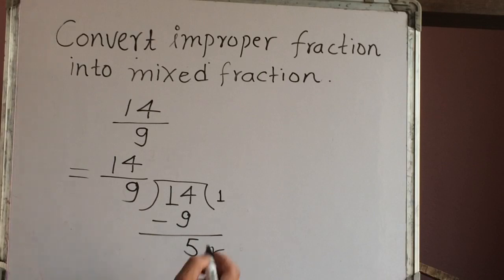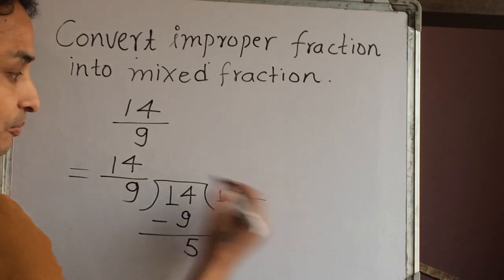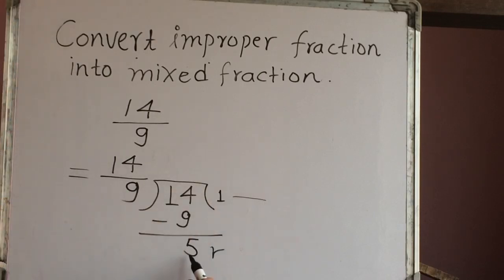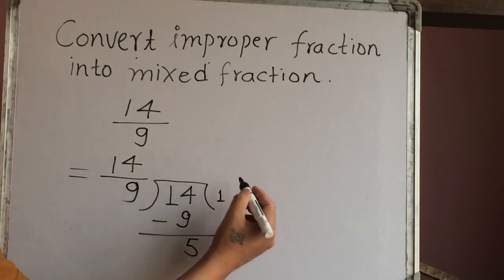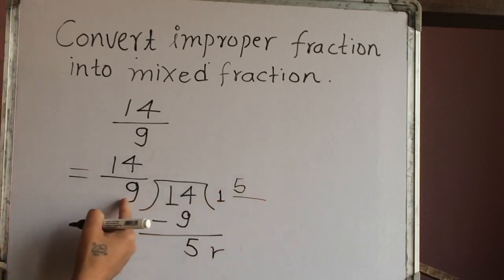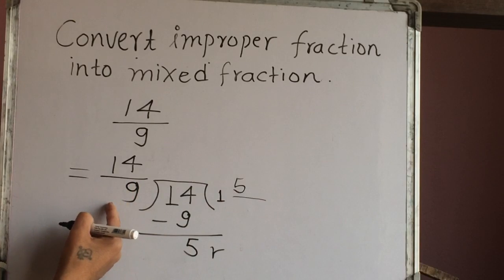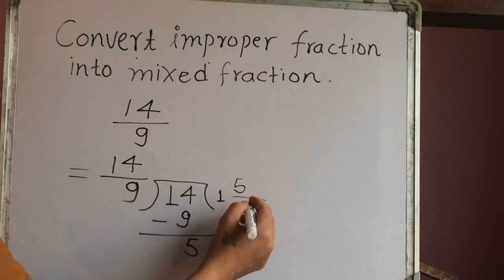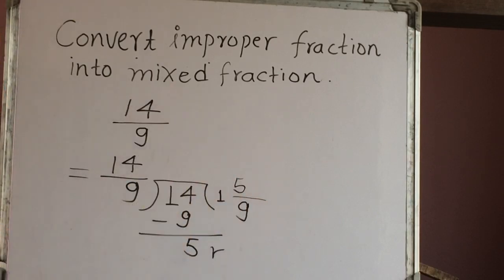Now we have to make one fraction here. This remainder 5 we have to write as the numerator here, and this divisor we have to write as the denominator. So this is 1 and 5 out of 9.